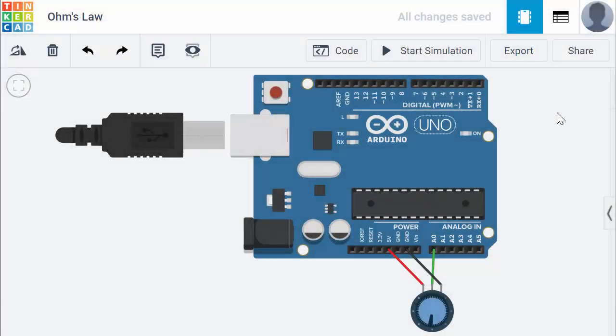Hi, this is Professor Kleitz. A lot of you have probably seen the application where you use an Arduino to measure the voltage off of a wiper from a variable potentiometer. I'm going to use this application to talk a little bit about Ohm's Law.